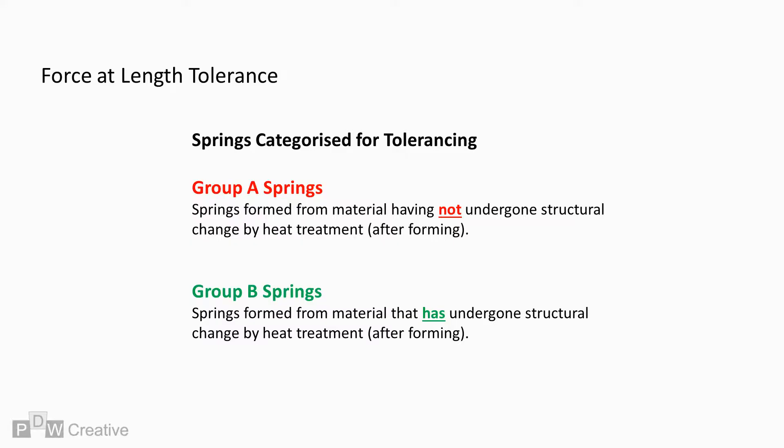Standards such as BS1726 split springs into two distinct groups. Group A springs are formed from material that has not undergone heat treatment, whereas Group B springs are formed from material that has undergone heat treatment.